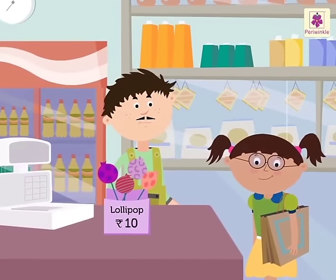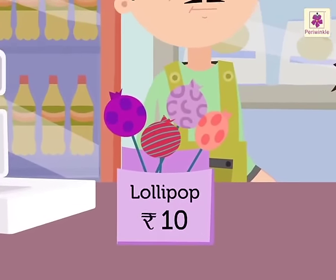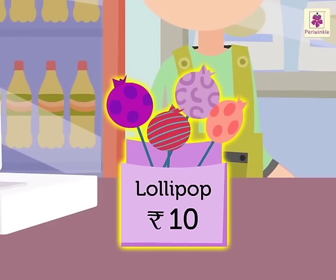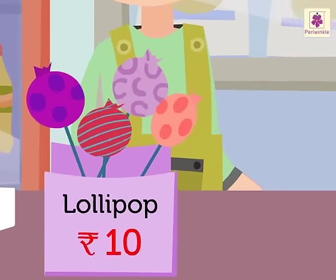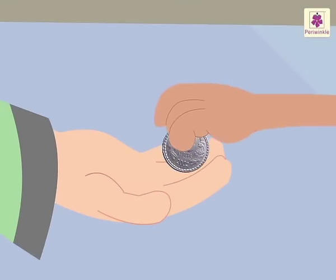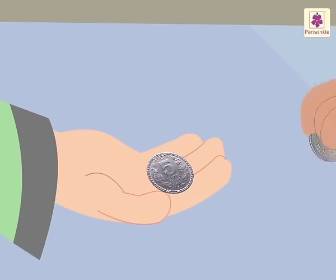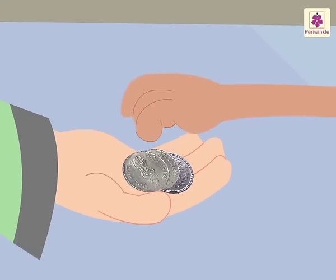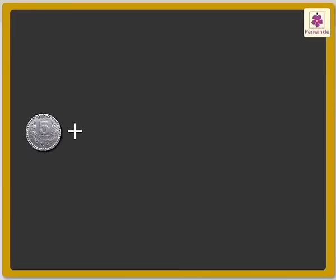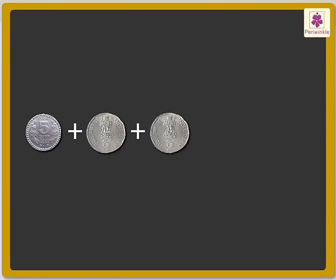Saira is going to a grocery shop to buy a lollipop. The cost of the lollipop is 10 rupees. Saira gives a 5 rupee coin, then a 2 rupee coin, one more 2 rupee coin, and at last a 1 rupee coin. It means she gave 5 plus 2 plus 2 plus 1 is equal to 10 rupees to the shopkeeper.